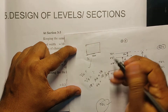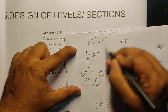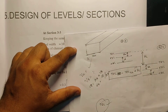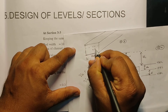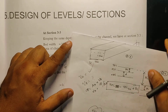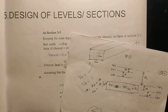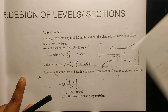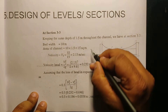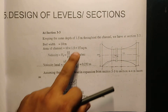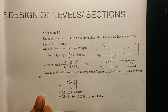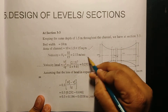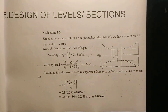This is a cross section of the canal. The width is 10 meters, and the depth of water is 1.5 meters. So the area A3 = 1.5 times 10 = 15 square meters. Therefore, V3 = Q divided by A3 = 32 divided by 15 = 2.13 meters per second.